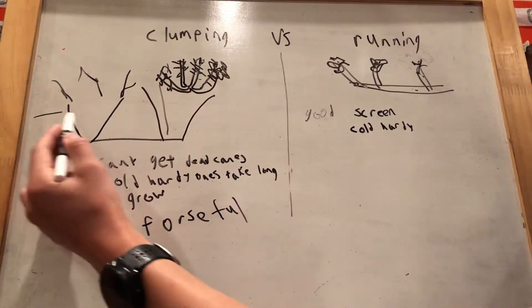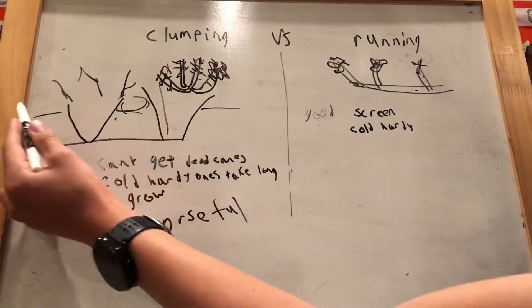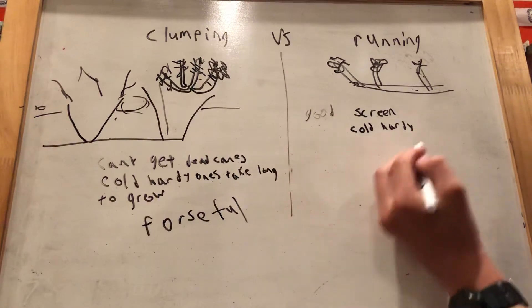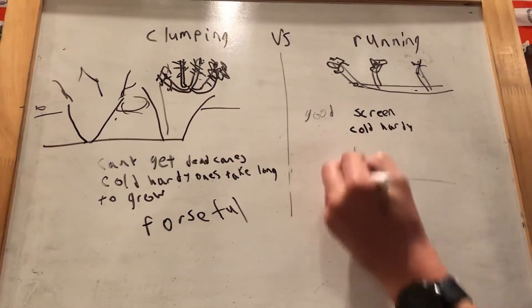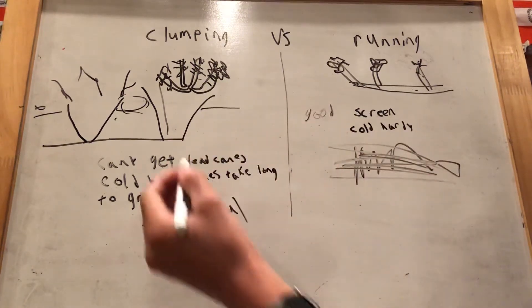If you put clumping bamboo along a wall like a fence here, it would grow areas where you could still see through. Whereas running bamboo would be like bamboo just covering everything with a lot of leaves because it forms really tight clumps.